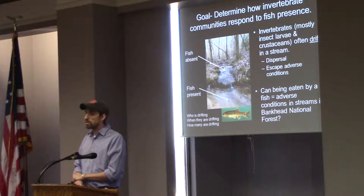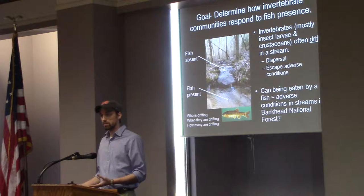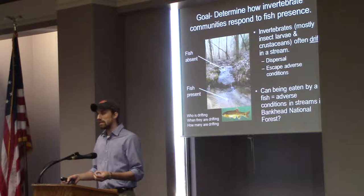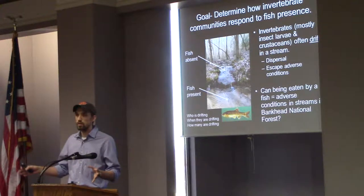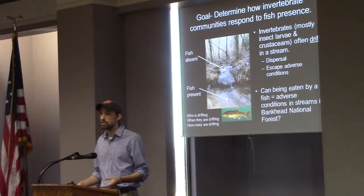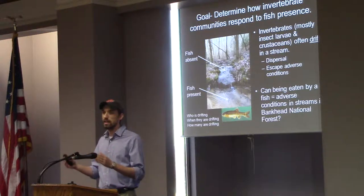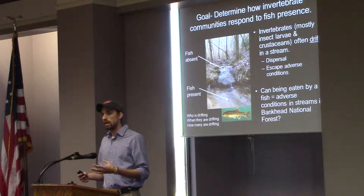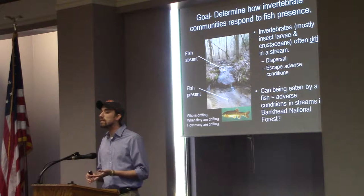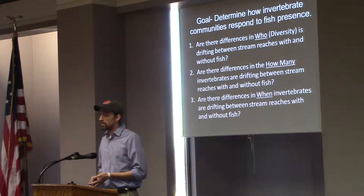It's also been shown in the literature that in the presence of a predator, especially a vertebrate predator, these bugs will selectively let go. If a fish tries to eat them and is not successful, they'll run away by letting go in the stream. You'll see changes in their densities, their taxa richness, and even in when they're drifting. So that's going to be some of our questions.